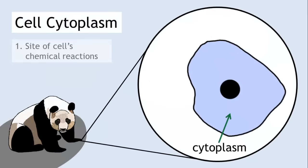The cell cytoplasm is the site of the cell's chemical reactions. Lots of chemical reactions occur here, such as respiration. Respiration takes place in specialised structures called mitochondria.